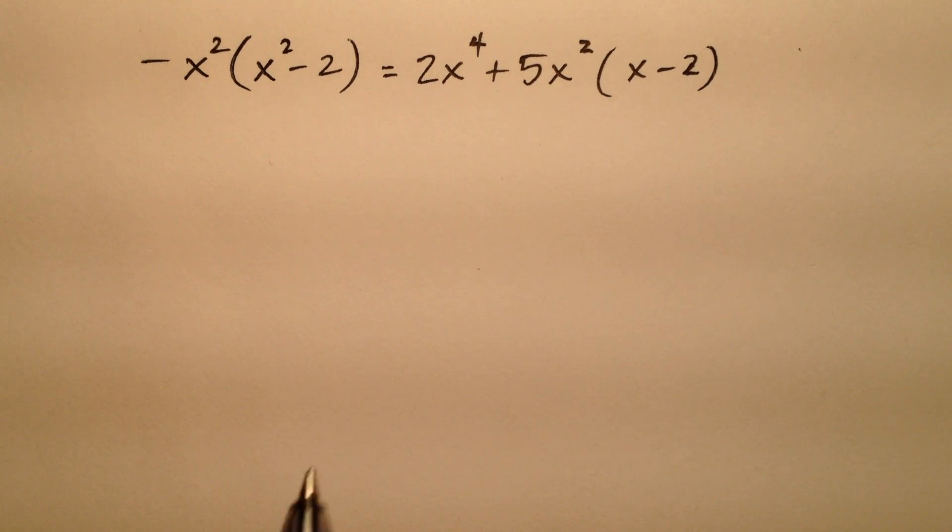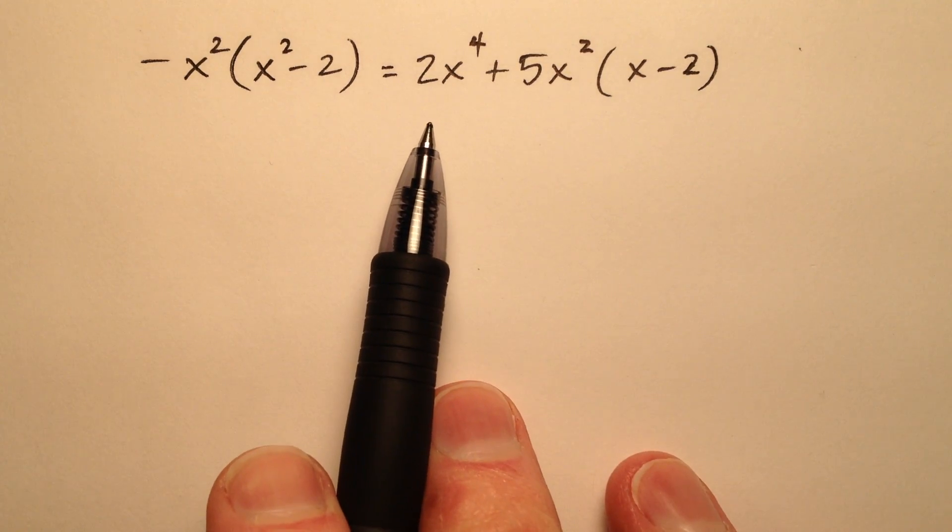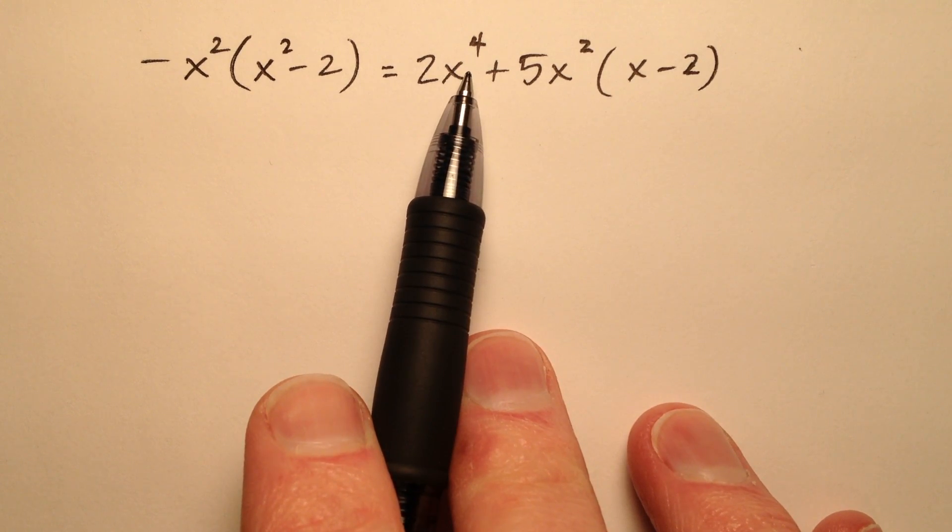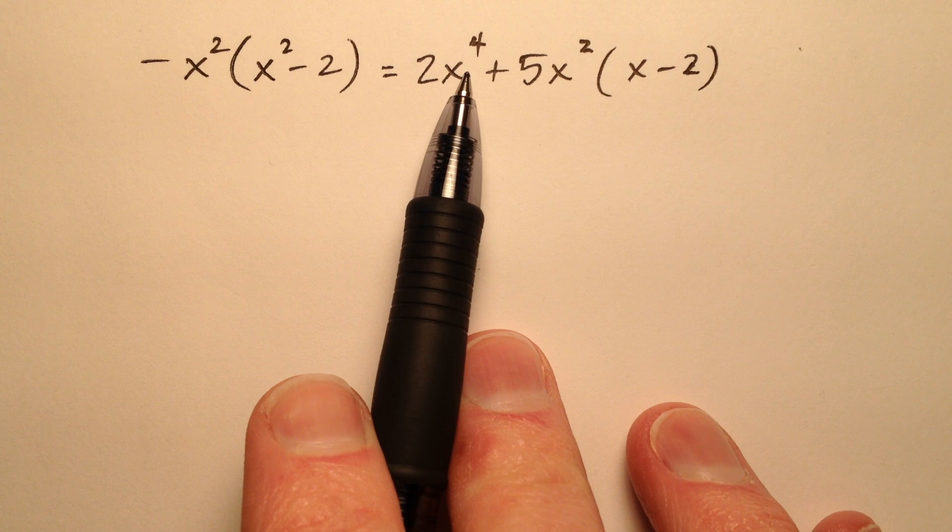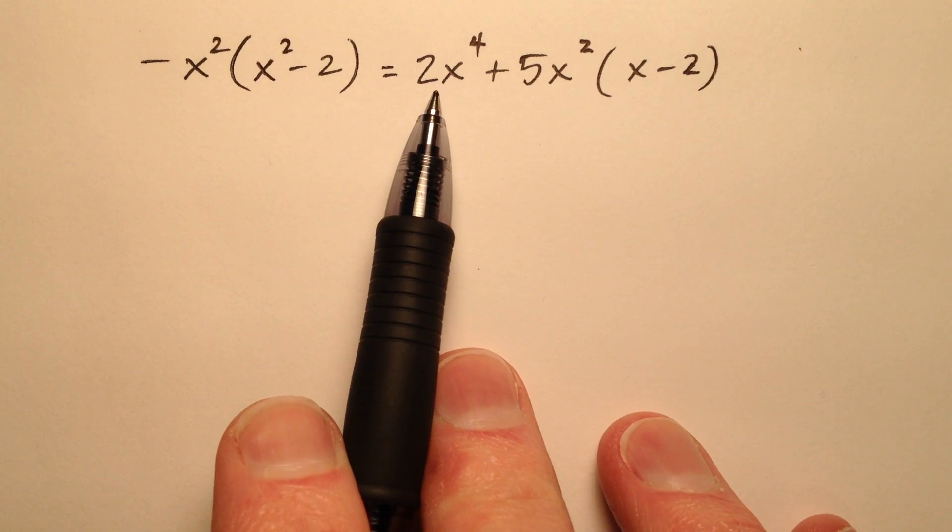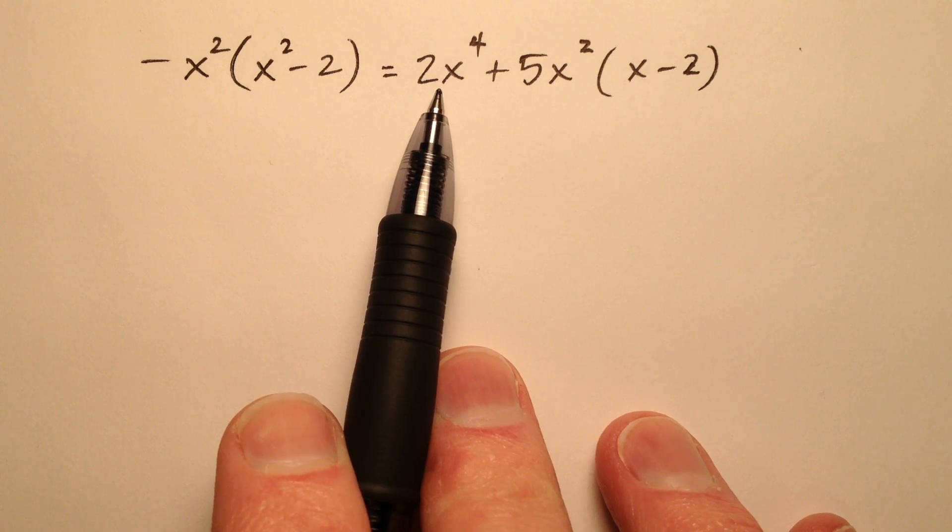Here we're going to solve this equation by factoring. I notice there's an x to the fourth term here, so this is at least going to be a quartic equation. But my guess is that either we're going to have a greatest common factor or it will factor like a quadratic.